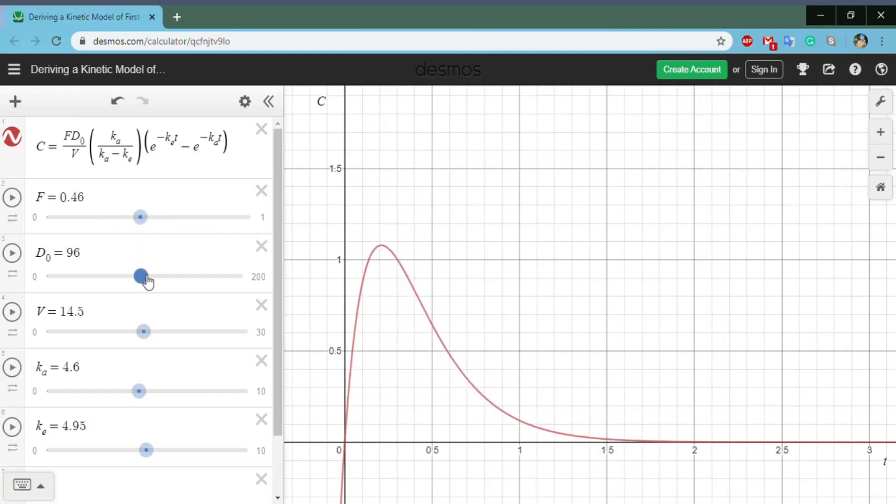The same effect goes for D0. The more drug you eat initially, the more drug will be in your body. But the less drug you eat, the less drug will be in your body. Very simple.